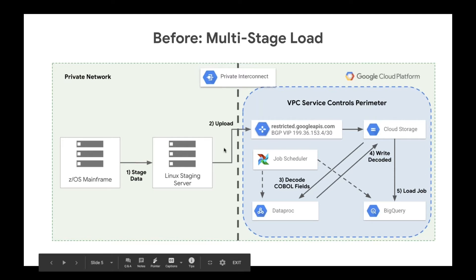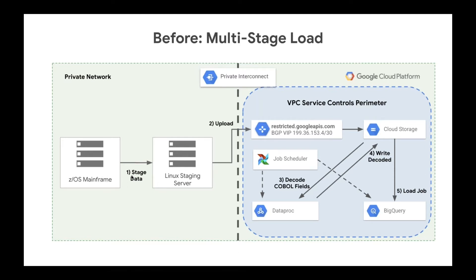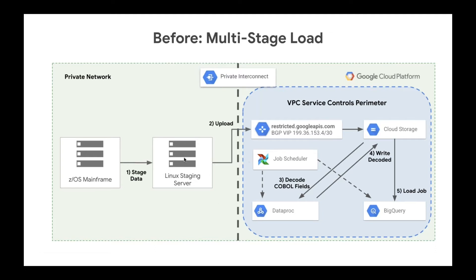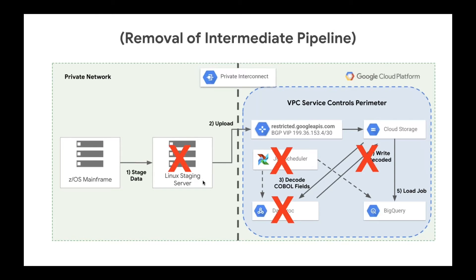What we see several customers with mainframes doing to get data into BigQuery is: first, they have some kind of NFS or FTP to get the data off onto a Linux server, and then from there some other job scheduling system to get it into BigQuery. This works fine because there are plenty of people who have a team familiar with loading data once it's on a Linux server — there are more people in the organization familiar with those tools.